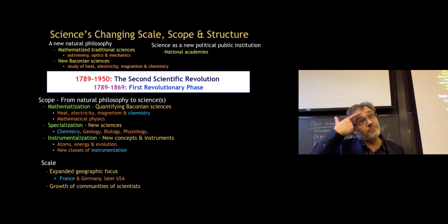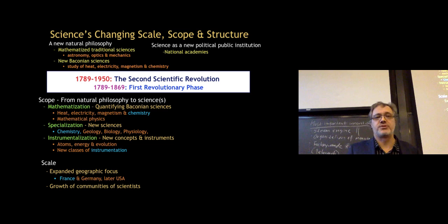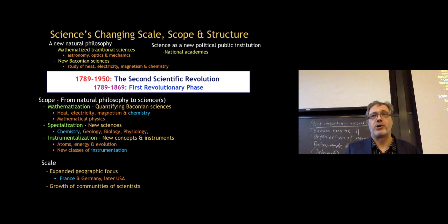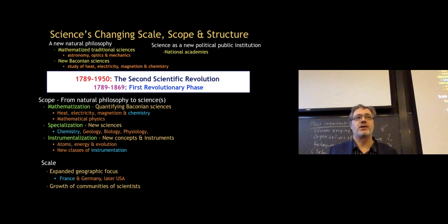In terms of scale, science is expanding its geographic focus. The First Scientific Revolution was primarily focused on Italy and England — Bacon, Newton, and also Galileo and Copernicus. But now, France and Germany become new centers. Later, during the Second Industrial Revolution, the US becomes a powerhouse of science, especially before and after the Second World War. We also see a growth of scientific communities — more and more people working in and on science.